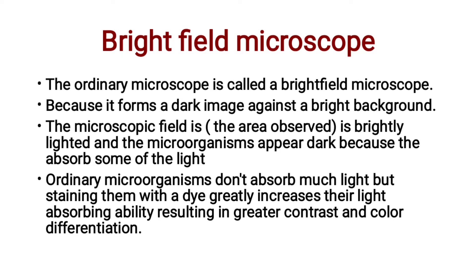The bright field microscope — the ordinary compound microscope — is called a bright field microscope because it forms a dark image against a bright background. The microscopic field, that is, the area observed, is brightly lit and the microorganisms appear dark because they absorb some of the light.